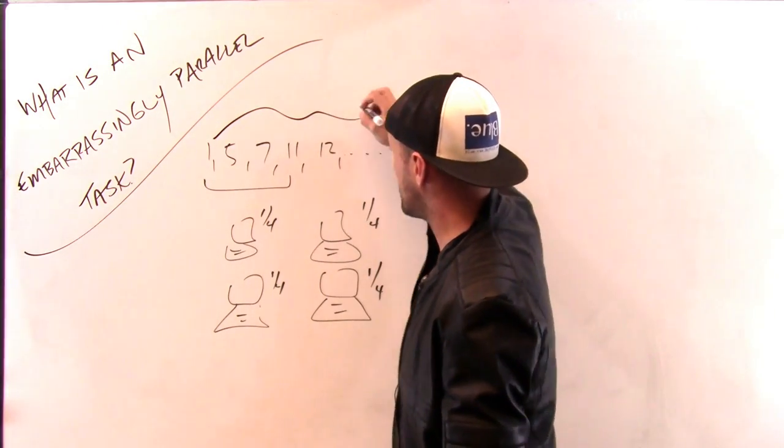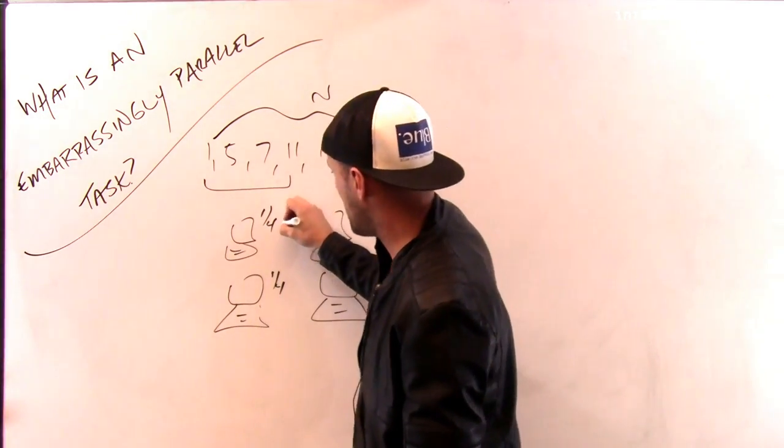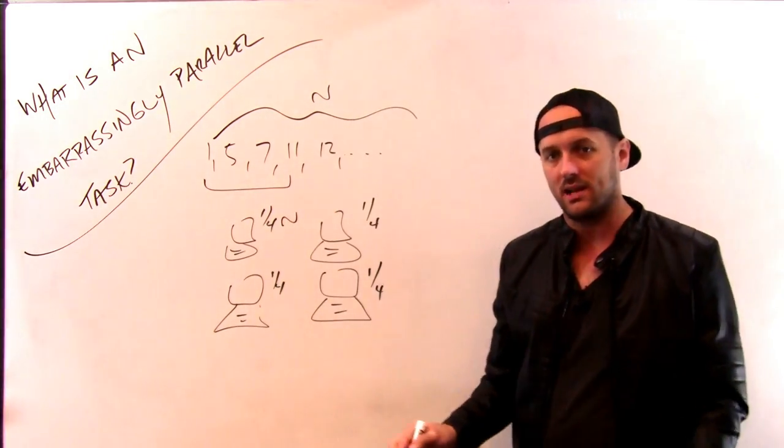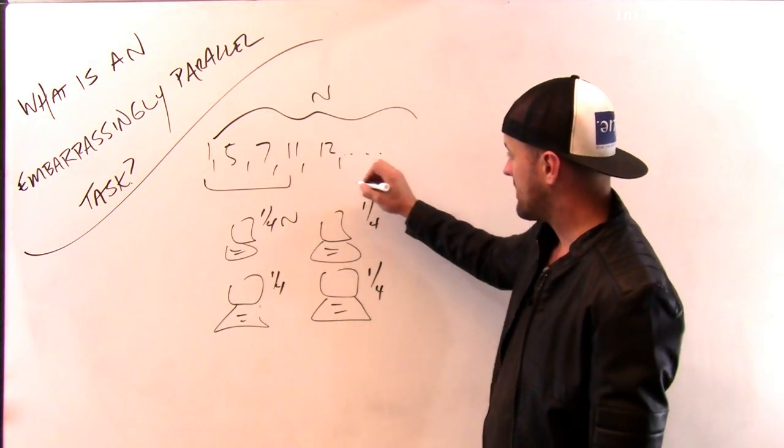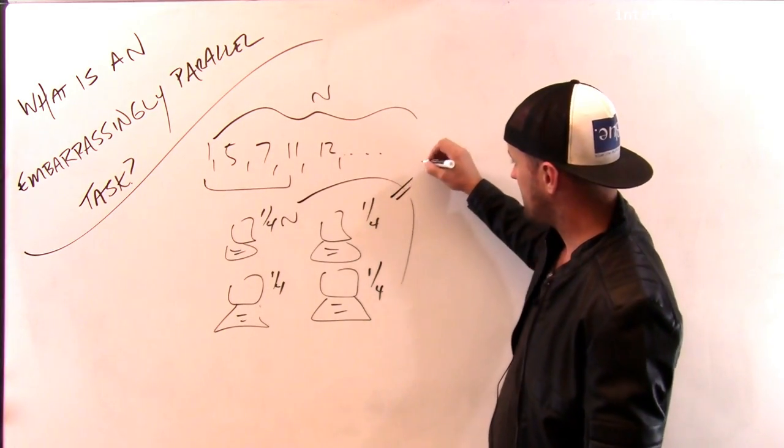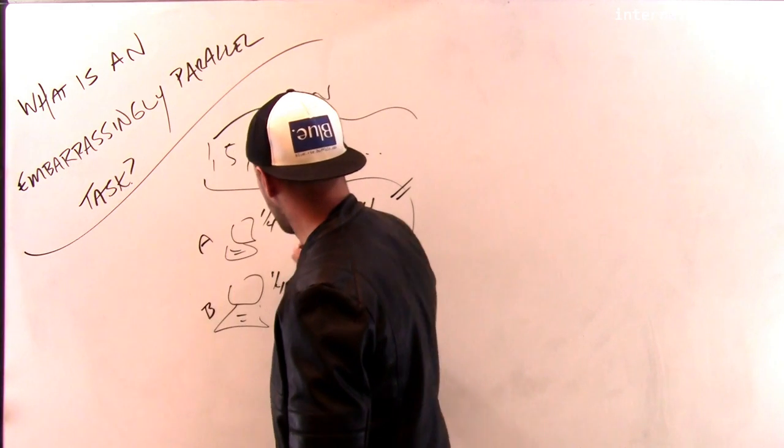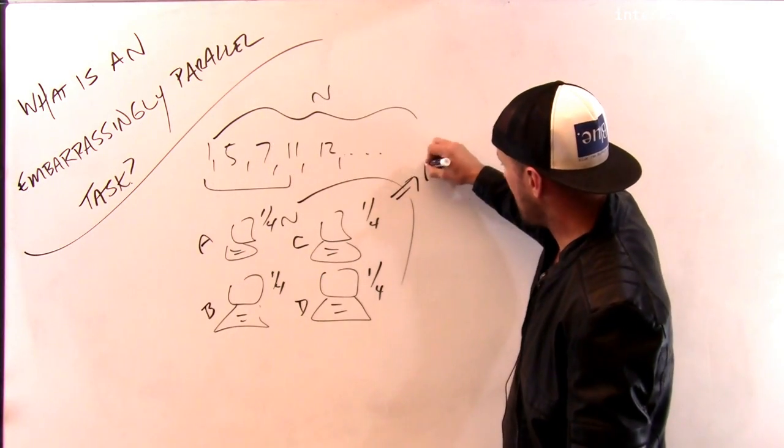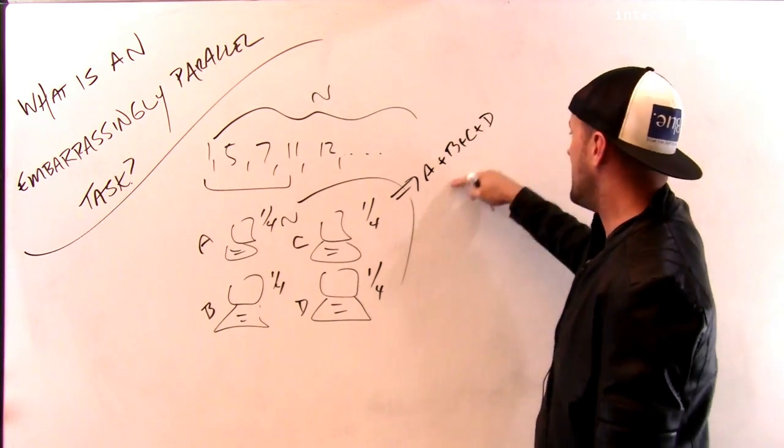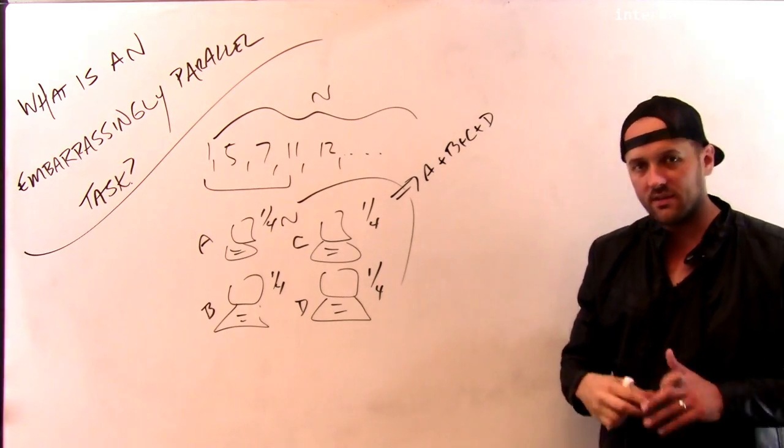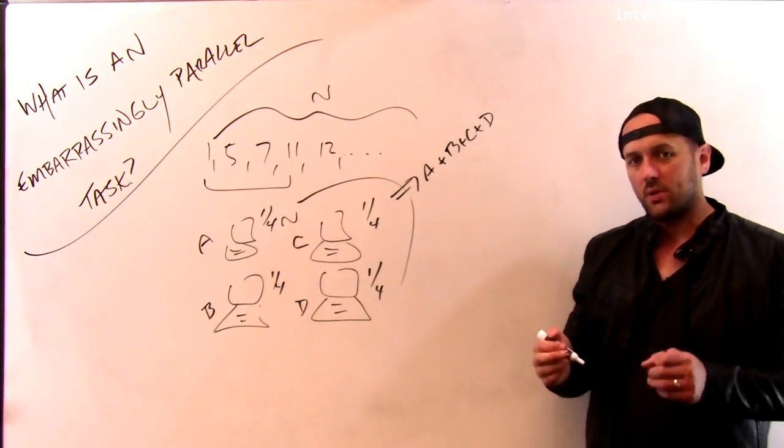If adding up all of these took some amount of time, then adding them up here is going to take a quarter of that amount of time for each machine, assuming that they're running at the same speed. And then what do I do? Well, then I can combine the results because the result of the calculation is just adding up all the results from these different computers. If I want the total sum, I just take the sum from A plus the sum from B plus the sum from C plus the sum from D. This is quite fast, it's only four additions, and I'm done. So this is an example of a problem that is very easy to split up between multiple machines.